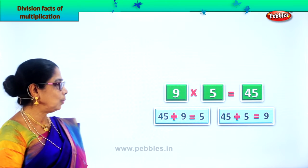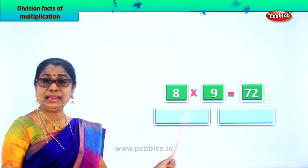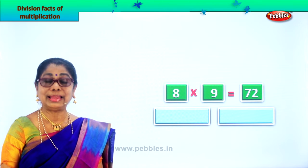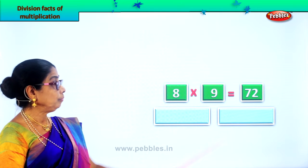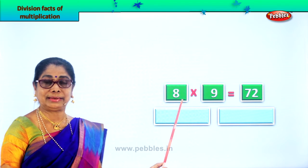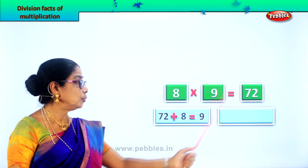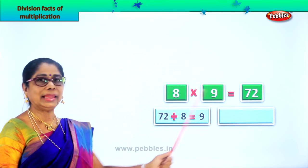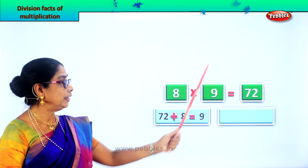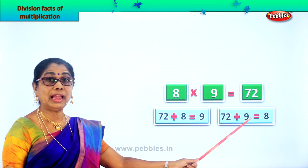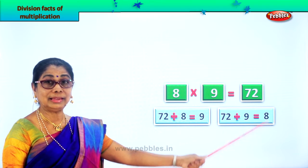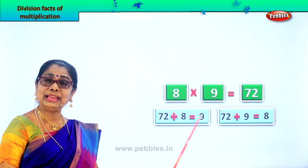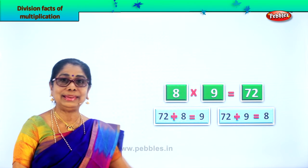Let's take another new sum. You are given eight into nine — eight nines are seventy-two. That's a multiplication fact. Let's get two division facts. Seventy-two divided by eight — eight goes into seventy-two nine times — so you get the answer nine. Seventy-two divided by nine — nine goes into seventy-two exactly eight times — so your answer is eight. For one multiplication fact, eight into nine equals seventy-two, you get two division facts: seventy-two divided by eight gives you nine, seventy-two divided by nine gives you eight.